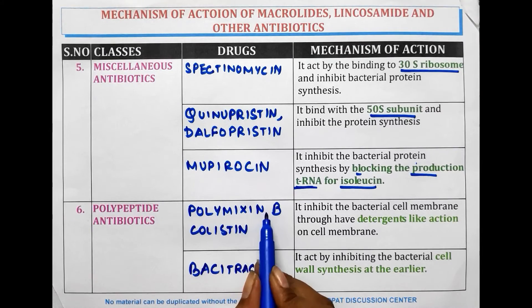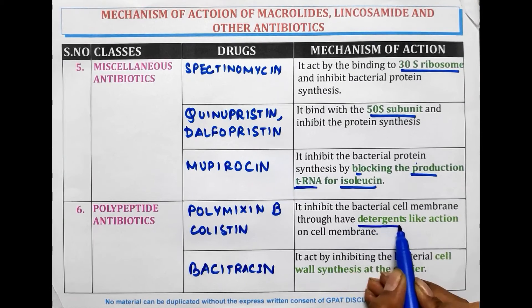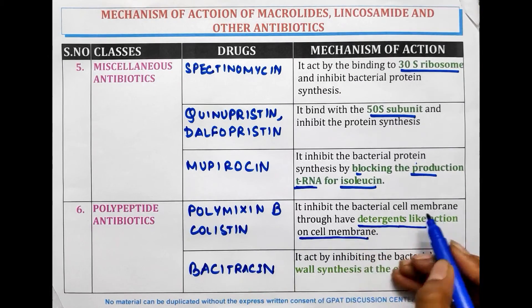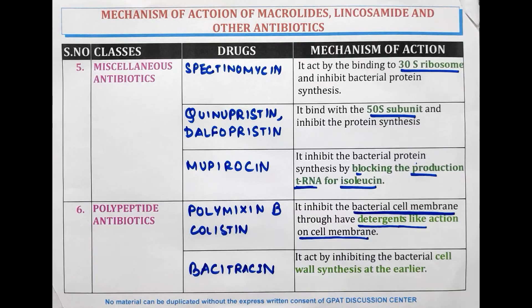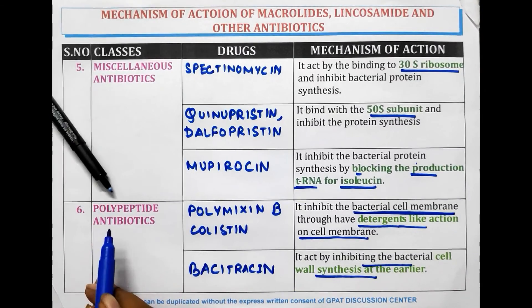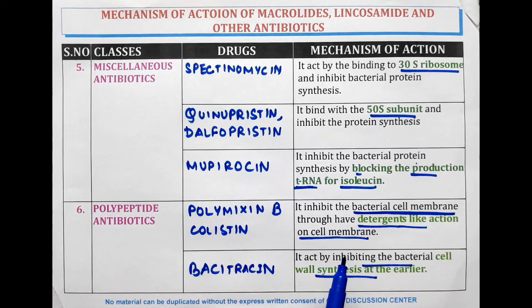Polymyxin B and Colistin act by inhibiting the bacterial cell membrane through a detergent-like action on the cell membrane. Bacitracin, which is also a polypeptide antibiotic, inhibits bacterial cell wall synthesis at the earliest stage. The last unclassified category is urinary antiseptics, which will be discussed in detail in the next video. Thank you for watching this video.